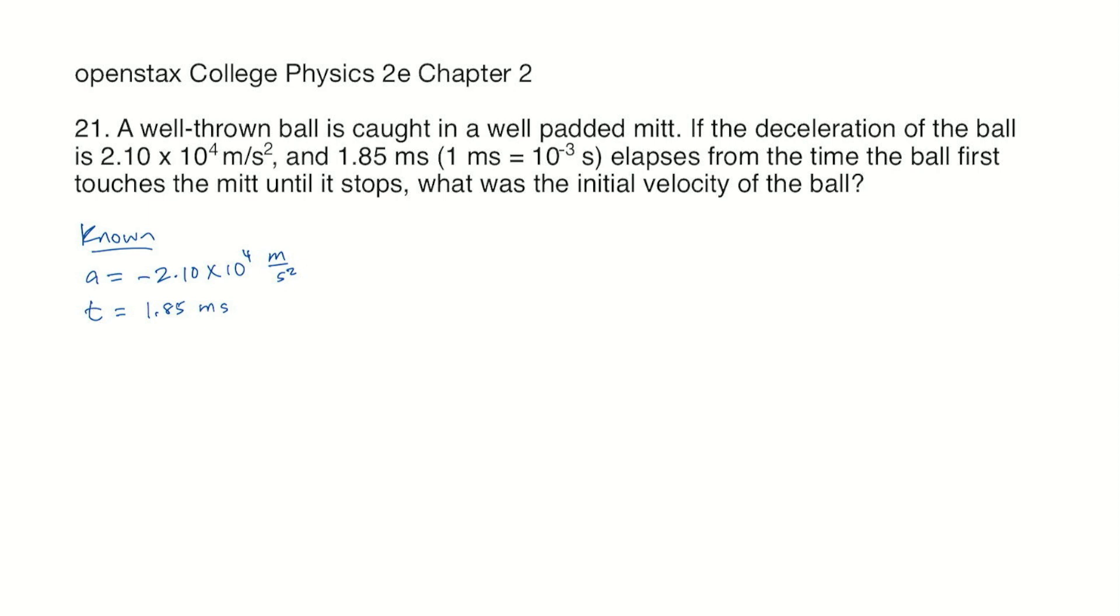The ball is moving when it first touches the mitt, that's v naught. That's what we need to find. And then the time goes until the ball stops, so our v final is 0 meters per second.